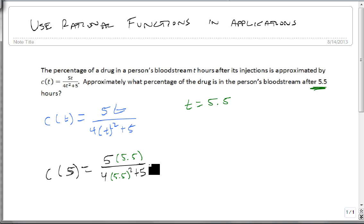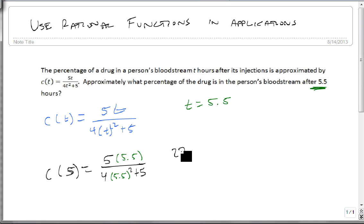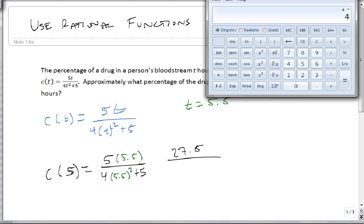Now at this point I'm going to grab a calculator and work through it this way. So we're going to do 5 times 5.5 and put 27.5 on top. On bottom we're going to get 4 times 5.5 squared plus 5 is 126.